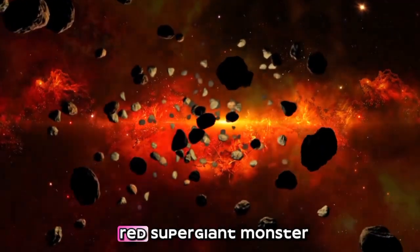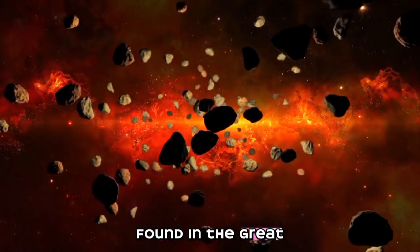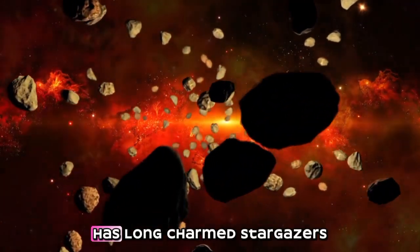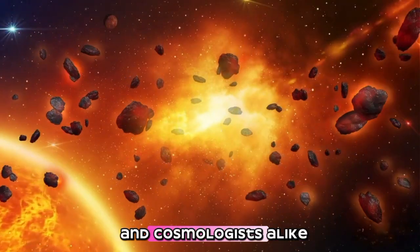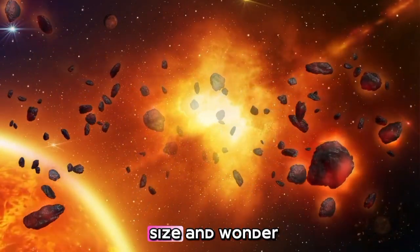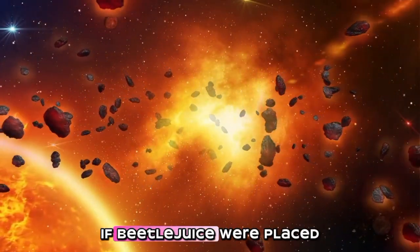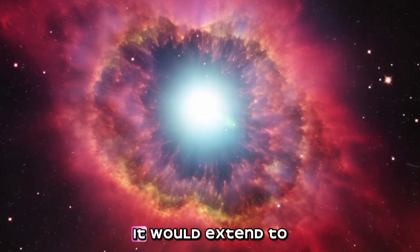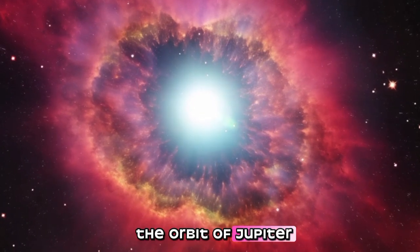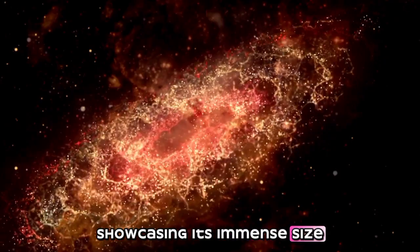The star Betelgeuse, a red supergiant monster found in the constellation of Orion, has long charmed stargazers and cosmologists alike because of its sheer size and wonder. If Betelgeuse were placed where our sun is, it would extend to the orbit of Jupiter, showcasing its immense size.